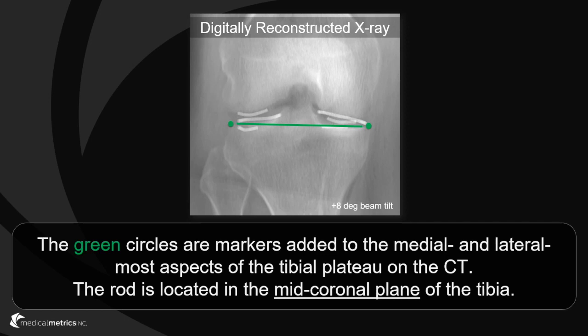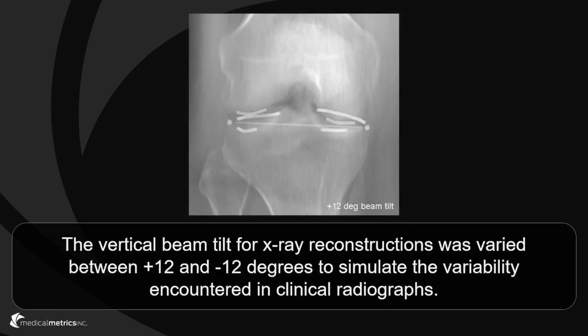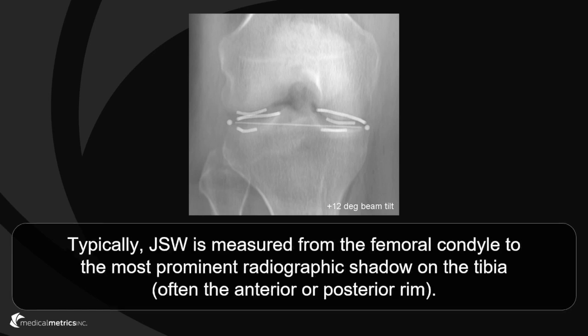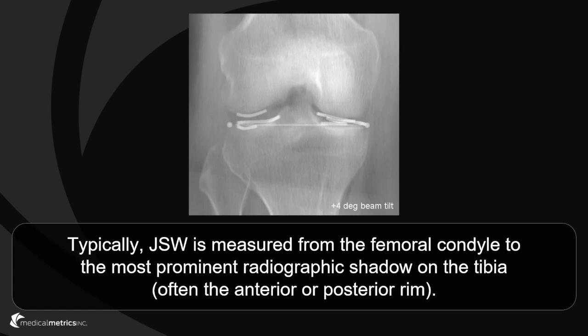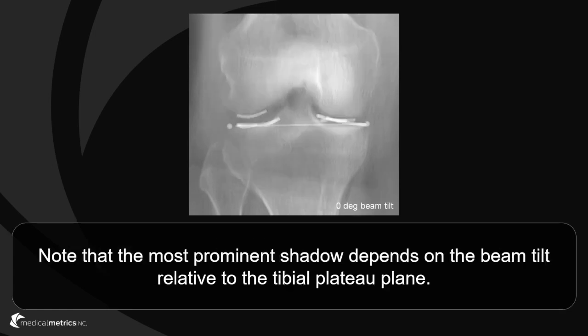The green line highlights the rod added to mark the mid-coronal plane of the tibia. The vertical beam tilt for the digitally reconstructed radiographs was varied between plus 12 and minus 12 degrees to simulate the variability encountered in clinical radiographs. Joint space width is commonly measured from the femoral condyle to the most prominent radiographic shadow of the tibial plateau — that shadow could be the anterior or posterior rim of the plateau or the subchondral bone. The most prominent shadow depends on the beam tilt relative to the plane of the tibial plateau.